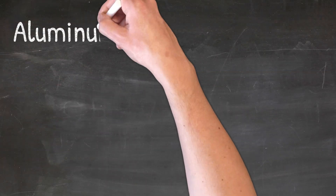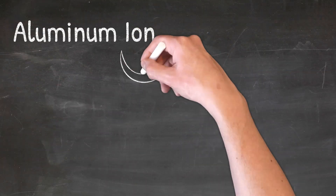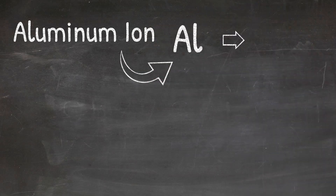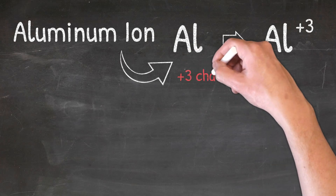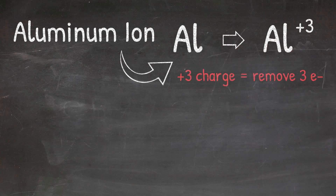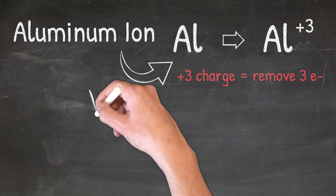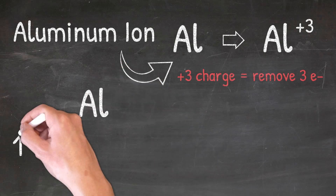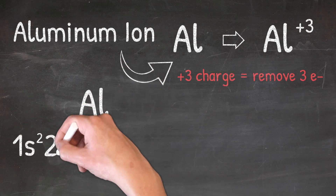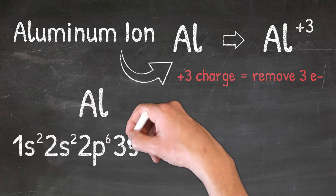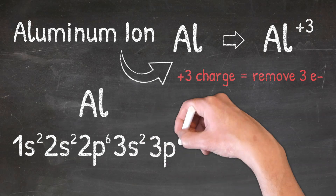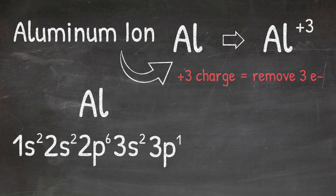In our next example we're going to look at the aluminum ion. When aluminum becomes an ion it's going to have a plus three charge. A plus three charge means that three electrons are removed. So again, let's start by writing the electron configuration for the aluminum atom: 1s2, 2s2, 2p6, 3s2, 3p1.